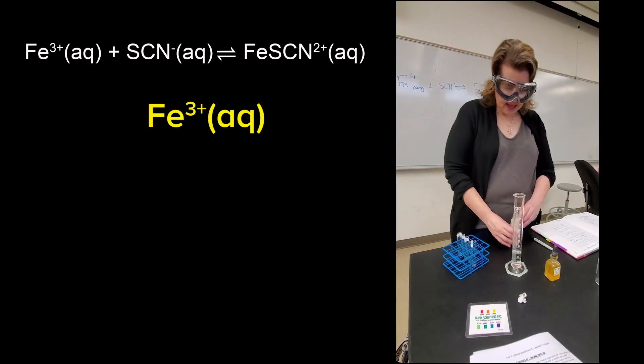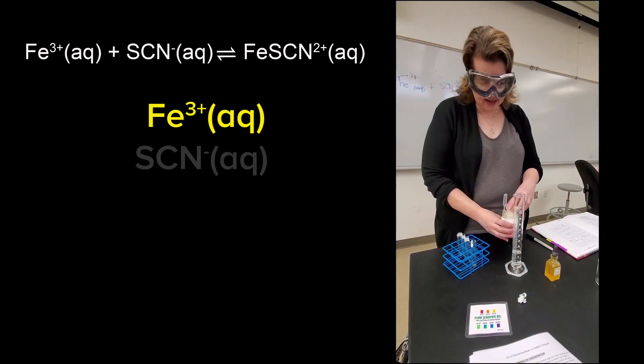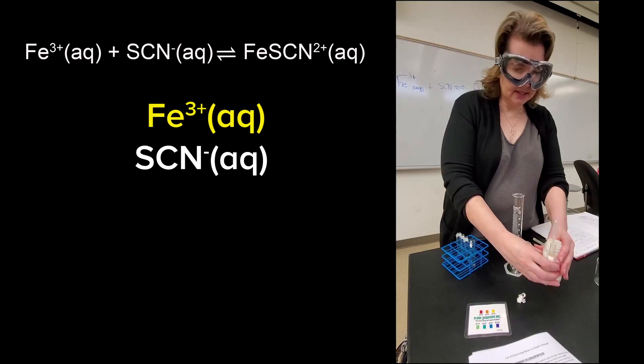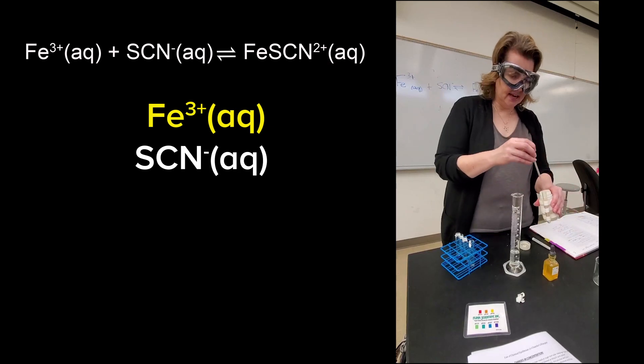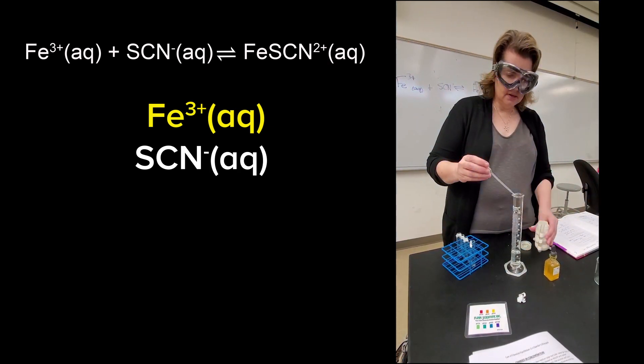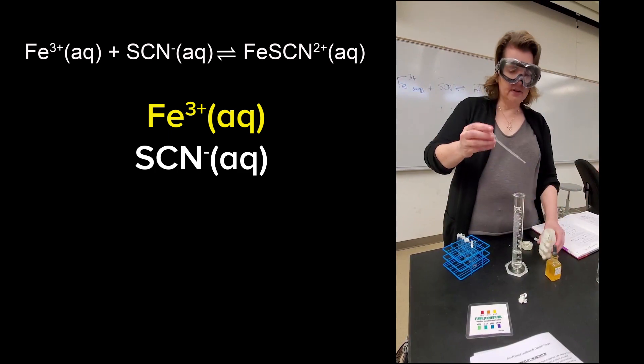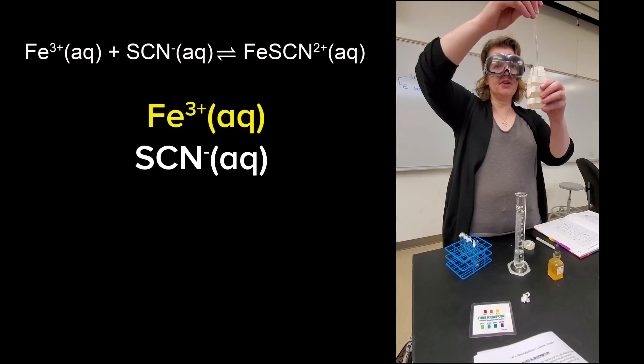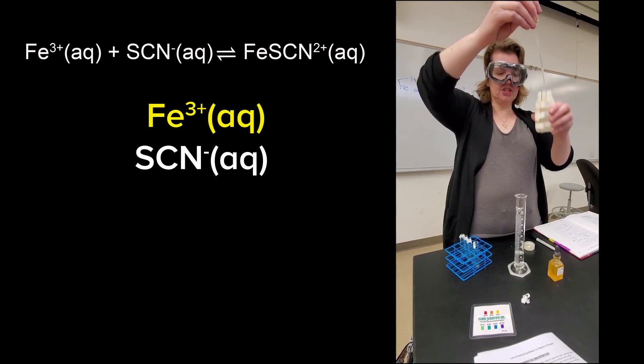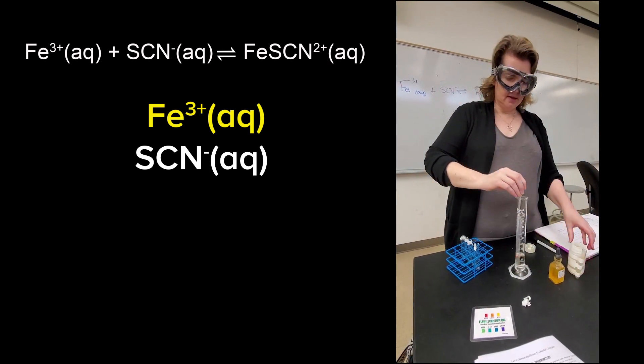So that iron complex is yellow. That's an important thing to note. And then the thiocyanate is clear. And I'm going to add how much of that one? Also half a mil of 0.1 molar. I'm going to really be quick and dirty on that one. I'm going to use the graduation marks.